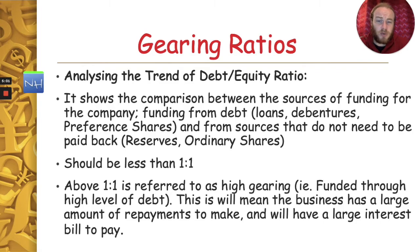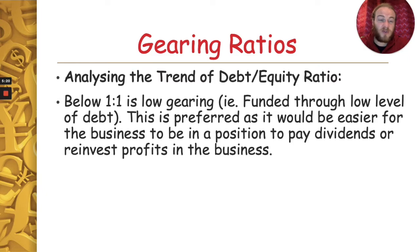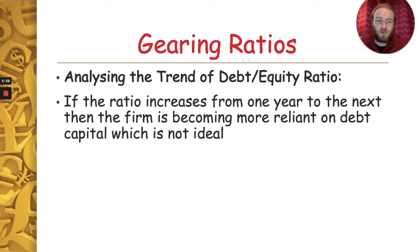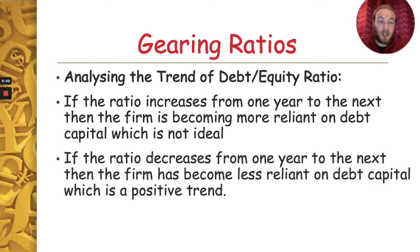Above 1.1 is referred to as high gearing — funded through a high level of debt — meaning the business has large repayments to make and a large interest bill to pay. Firms should not become too reliant on debt capital because interest has to be paid and preference dividends must be paid to preference shareholders whether or not the firm is making a profit. This reduces flexibility significantly. If the ratio is below 1 to 1, it's low gearing — low levels of debt — which is the preferred situation as it's easier to pay dividends to shareholders and reinvest profits to expand. If the ratio increases from one year to the next, the firm is becoming more reliant on debt capital, which is not a good trend. If it decreases, the firm has become less reliant on debt capital — that's a positive trend.